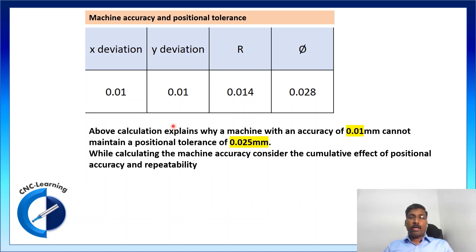Now, let us look at machine accuracy and position tolerance. Let us consider x deviation of 0.01 and y deviation of 0.01. Why 0.01? Because most of the machines will have positioning accuracy of 0.01, that is 10 microns. For both the axis, 10 microns.